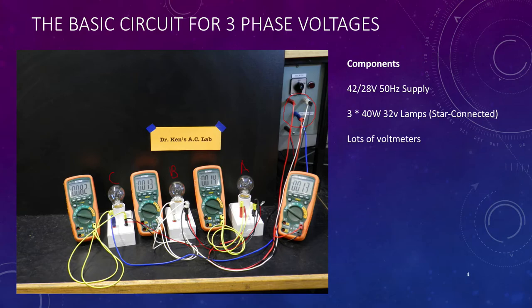And we've simply got a voltmeter across each phase, so each of these is across their appropriate lamps. And finally, I've just got a single voltmeter that you can see connected up here across two of the line connections. So that's our setup, very simple, very straightforward.